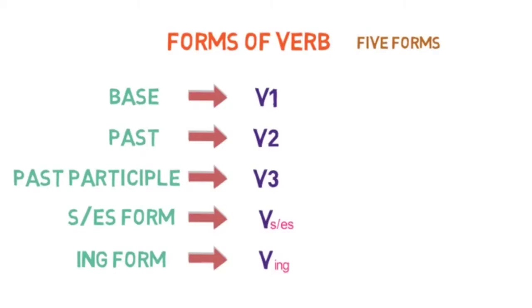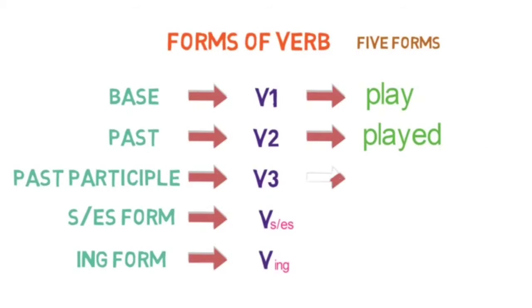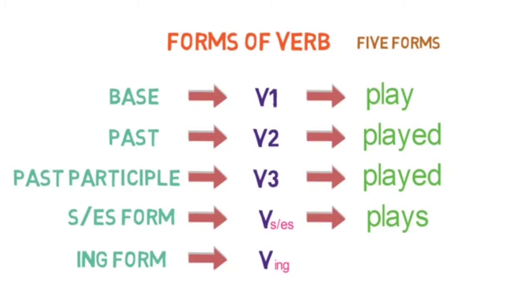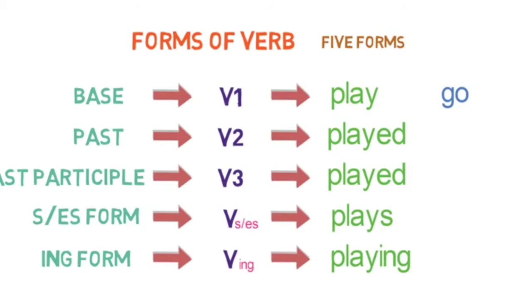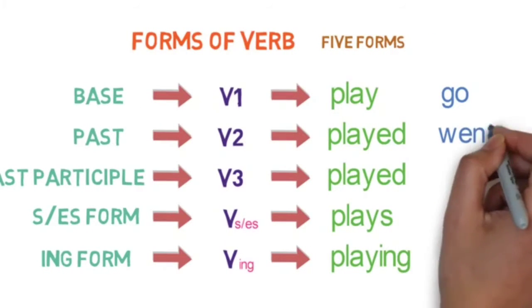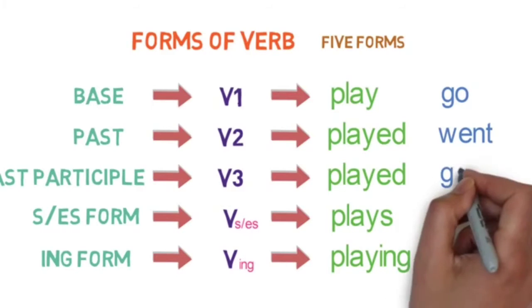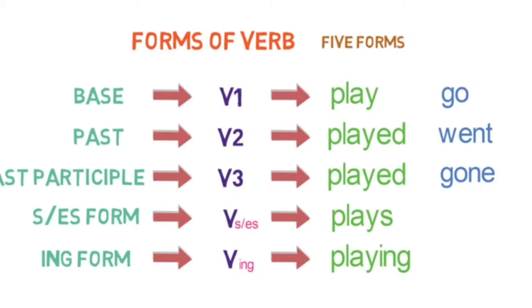Let's see an example for the verb 'play.' The base form is 'play,' the past form is 'played,' the past participle form is 'played,' the S/ES form is 'plays,' and the ING form is 'playing.' Let's see one more example with the verb 'go.' The base form is 'go,' past form is 'went,' past participle form is 'gone,' S/ES form is 'goes,' and the ING form is 'going.'